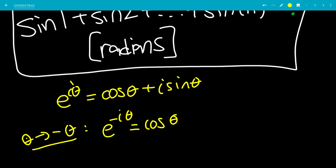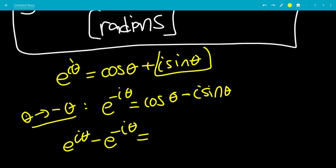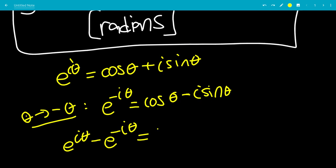Similarly, sine is an odd function, so sine of negative theta is the same thing as negative sine of theta, giving us negative i sine of theta. So we're going to do e to the i theta subtract e to the minus i theta. The cosine theta terms cancel, and i sine theta minus negative i sine theta gives us 2i sine of theta.